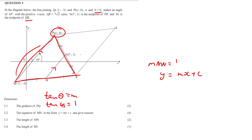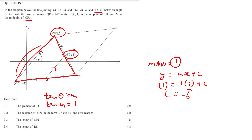We can use y = mx + c. The only known coordinate on MN is N, so we substitute x = 7 and y = 1. This gives 1 = 1(7) + c, so c = 1 - 7 = -6. With m = 1 and c = -6, the equation of MN is y = x - 6.